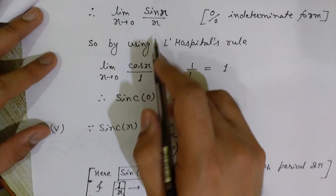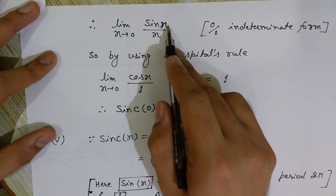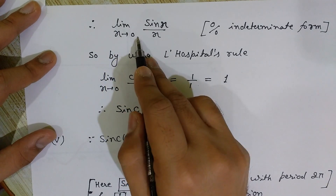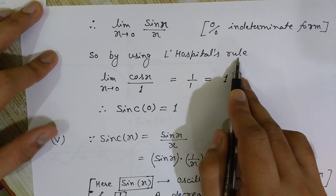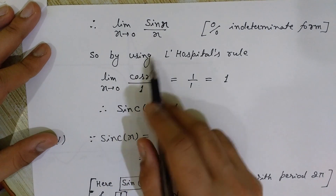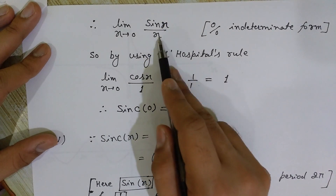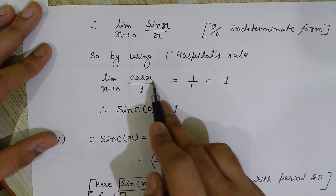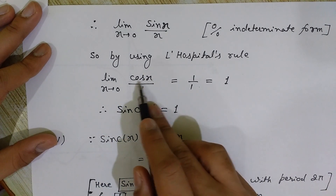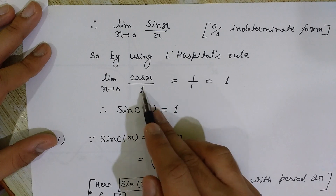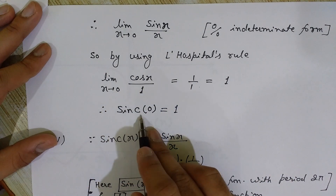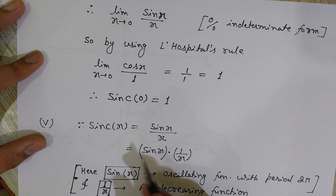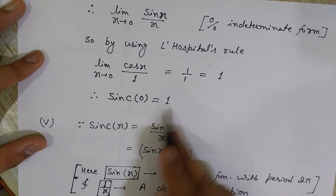Since it is lim(x→0) sin(x)/x, we apply L'Hôpital's rule and differentiate both numerator and denominator with respect to x. The differentiation of sin(x) is cos(x), and the differentiation of x is 1. So it becomes cos(0)/1 = 1/1 = 1. Therefore, the value of the sinc function at 0 is equal to 1.